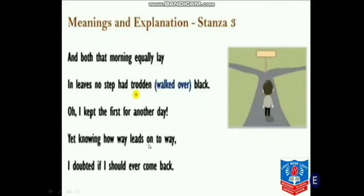'Yet knowing how way leads on to way' — the poet knows that once you set off on one road, it is difficult to come back, because one road leads to many other different paths, and you cannot return to the same starting point. In the same way in life, if we have taken any type of decision, we have to keep moving forward on that path because we cannot come back to the same point or the same situation. So he says 'I doubted if I should ever come back,' yet he still thinks he will save the other road for a second time.